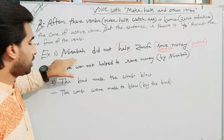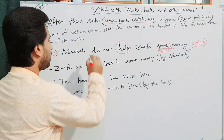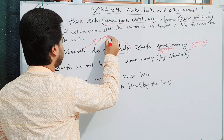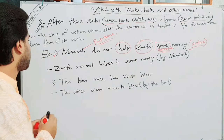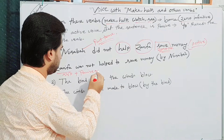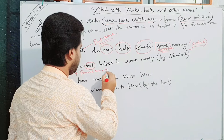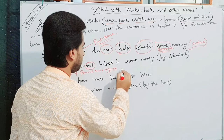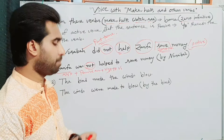Now I will transform this active voice to passive. Here: Jarifa was not helped — as this sentence is in past tense. The object of the active voice is Jarifa, so Jarifa becomes the subject. Passive auxiliary is used with 'not'. The structure is: subject plus passive auxiliary plus V3 of the verb, plus 'to', plus V1 or base form of the verb. Nusaiba did not help Jarifa save money.